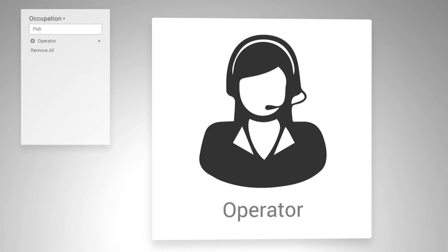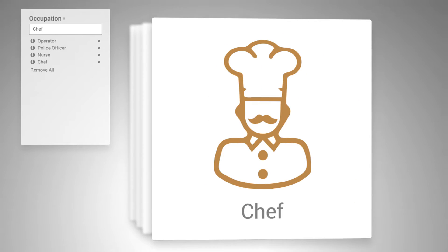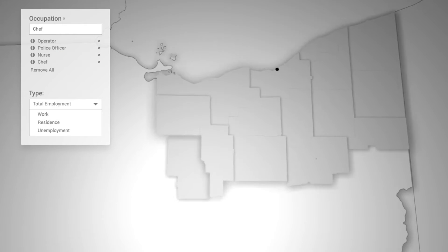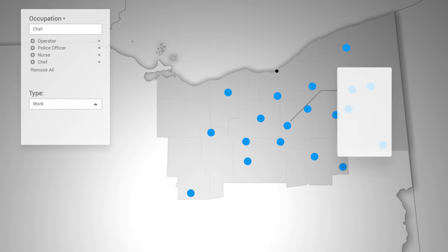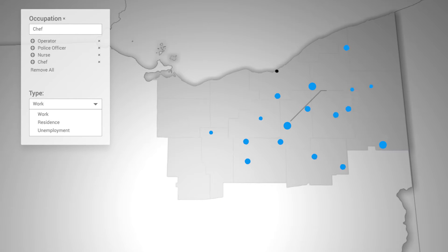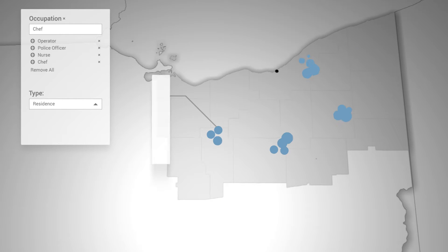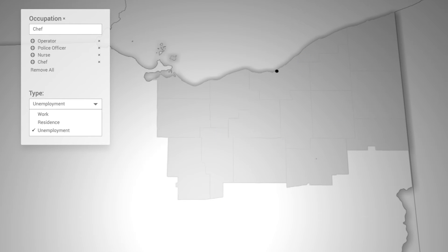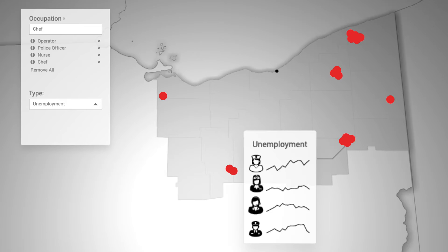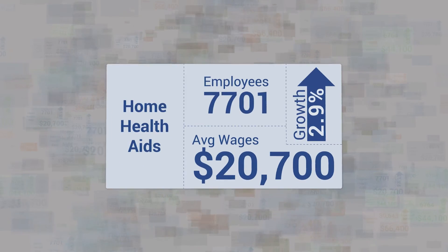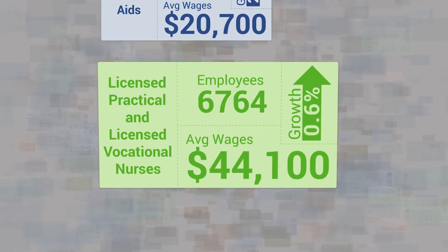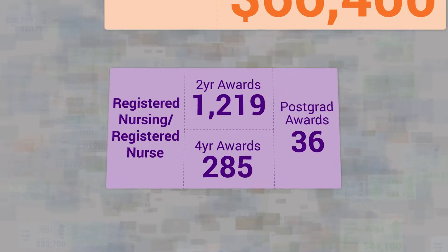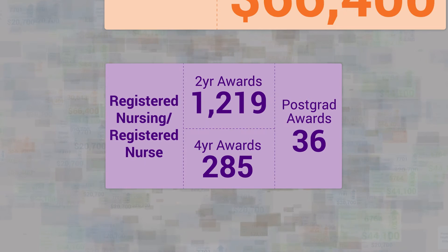You need information for a specific collection of occupations. Maybe employment by place of work isn't enough — you need employment by place of residence. You need your local occupation unemployment data. What about some career pathways? What about the education pipeline?